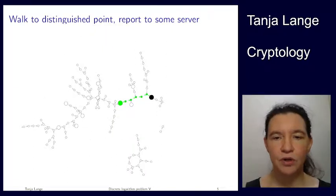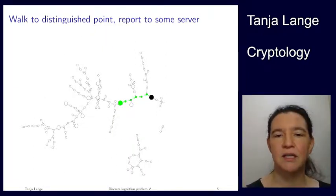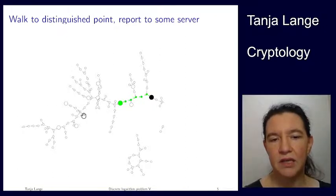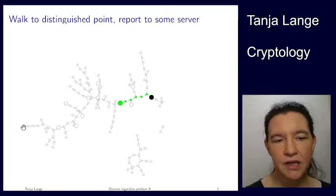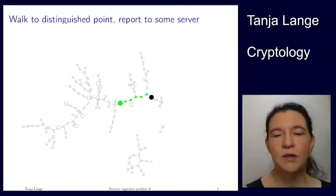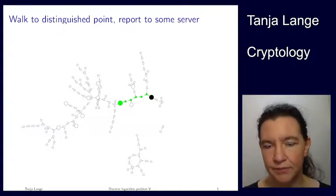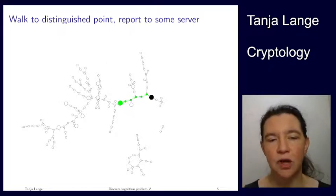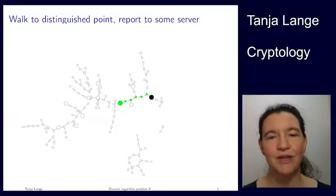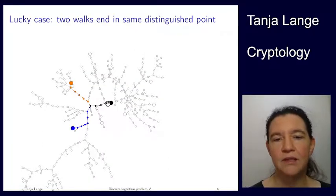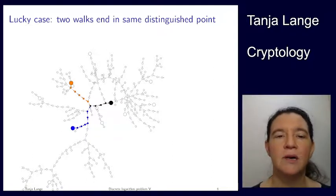Here's an example of the green walk, which started at the bottom left corner. This was the starting point for the green walk, and this is the straight path it took. This was the first thick point that it hit. Another example: if you're starting here, you're already at a thick point. If you're starting here, you would hop, hop, hop, hop, hop all the way till you get here. Distinguished points are randomly assigned, so you might have more or fewer steps till you get to one. Once you reach such a point, you stop and report to the server. In the happy case of these two walks that merged here — we don't find the collision here, here, here, or here; we find it eventually at the point where both end up at a distinguished point.